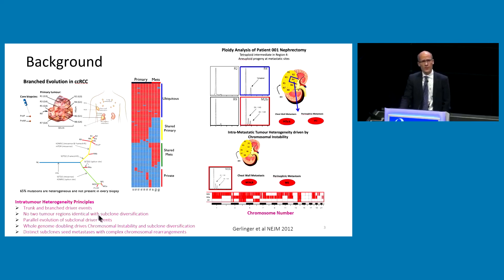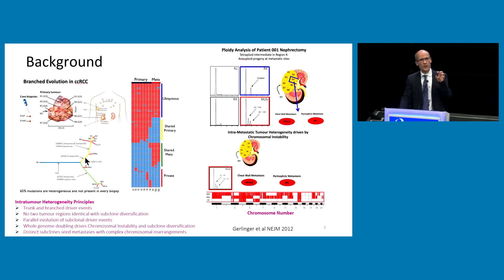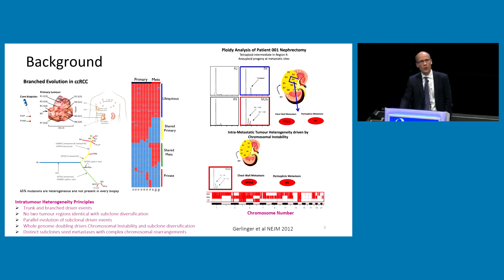No two tumor regions, when you biopsy them and subject them to whole genome or exome sequencing, are identical. There's evidence of subclonal diversification and branched evolution at a whole tumor level. We see evidence of parallel evolution of subclonal driver events in tumor suppressor genes such as SETD2, subject to distinct mutations in different regions of the tumor. We also see whole genome doubling, where the whole genome literally doubles, driving chromosomal instability upon which natural selection acts.